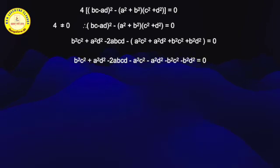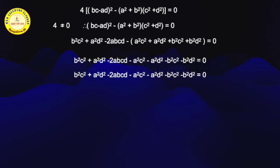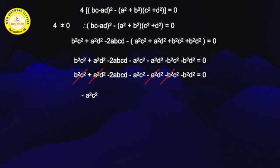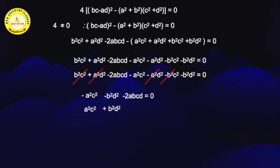Expanding the minus sign across the bracket: b²c² + a²d² - 2abcd - a²c² - a²d² - b²c² - b²d² = 0. Now we identify cancellations: b²c² cancels with -b²c², and a²d² cancels with -a²d². What is left is: -a²c² - b²d² - 2abcd = 0. In all three terms there is a minus sign, so I multiply throughout by minus to make them positive: a²c² + b²d² + 2abcd = 0.